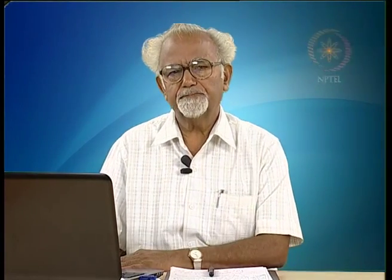Number five, the total rotation theta produced by a number of optically active substances is the algebraic sum of the rotations theta 1, theta 2, theta 3 produced by individual substances. Some thetas will be positive for a right-handed system, and some will be negative if the system is a left-handed one.